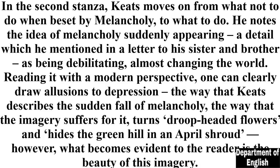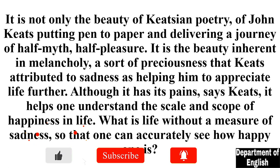In the second stanza, Keats moves on from what not to do when beset by melancholy, to what to do. He notes the idea of melancholy suddenly appearing — a detail he mentioned in a letter to his sister and brother as being debilitating, almost changing the world. Reading it with a modern perspective, one can clearly draw allusions to depression. The way that Keats describes the sudden fall of melancholy, the imagery of droop-headed flowers and the green hill hidden in an April shroud, is deeply evocative.